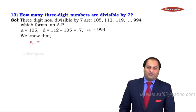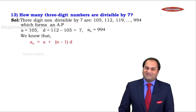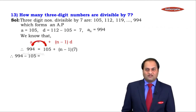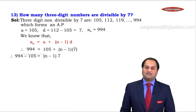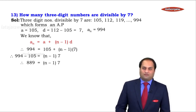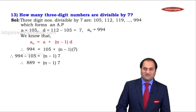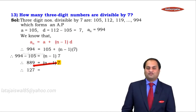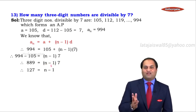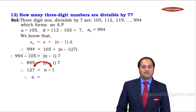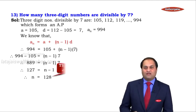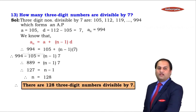Using the formula AN = A + (N − 1) × D, we get: 994 = 105 + (N − 1) × 7. So 994 − 105 = (N − 1) × 7, giving 889 = (N − 1) × 7. Dividing both sides by 7: 889 ÷ 7 = 127 = N − 1. Therefore N = 127 + 1 = 128. There are 128 three-digit numbers divisible by 7.